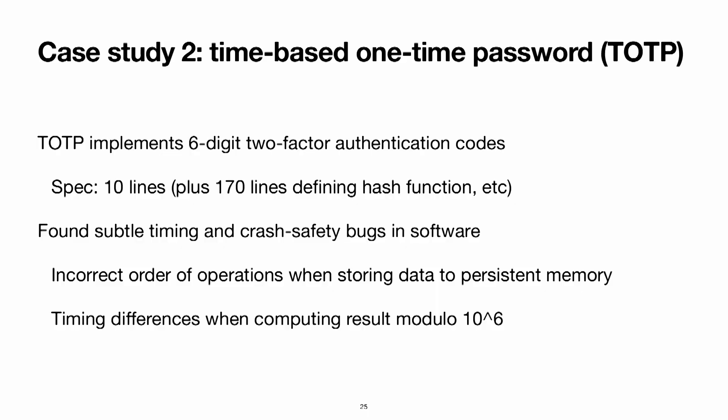Another case study is a time-based one-time password implementation, or TOTP — the kind that generates six-digit two-factor authentication codes on your phone. The spec is again extremely simple, ten lines plus boilerplate for a hash function. We found a subtle bug where secrets were written to Flash in the wrong order, so crashing at just the wrong cycle could unintentionally reveal a previous secret. We also found a timing difference: we were revealing the six-digit code using a modulo operator, which turned out to be variable-time depending on the value's bits. We had to implement a constant-time modulo to meet the spec.